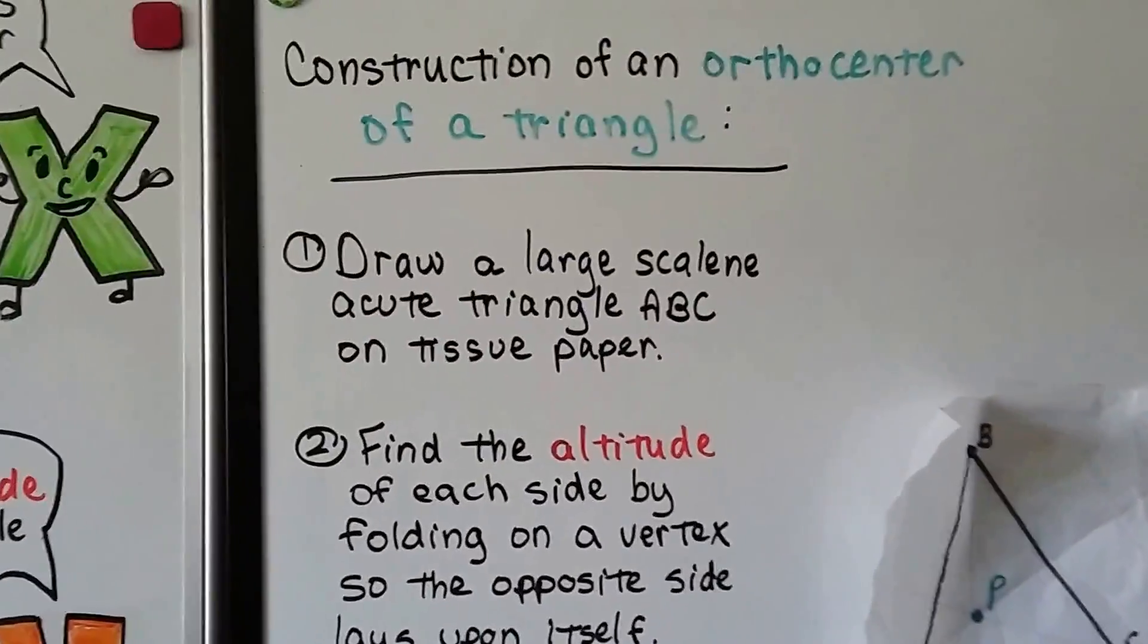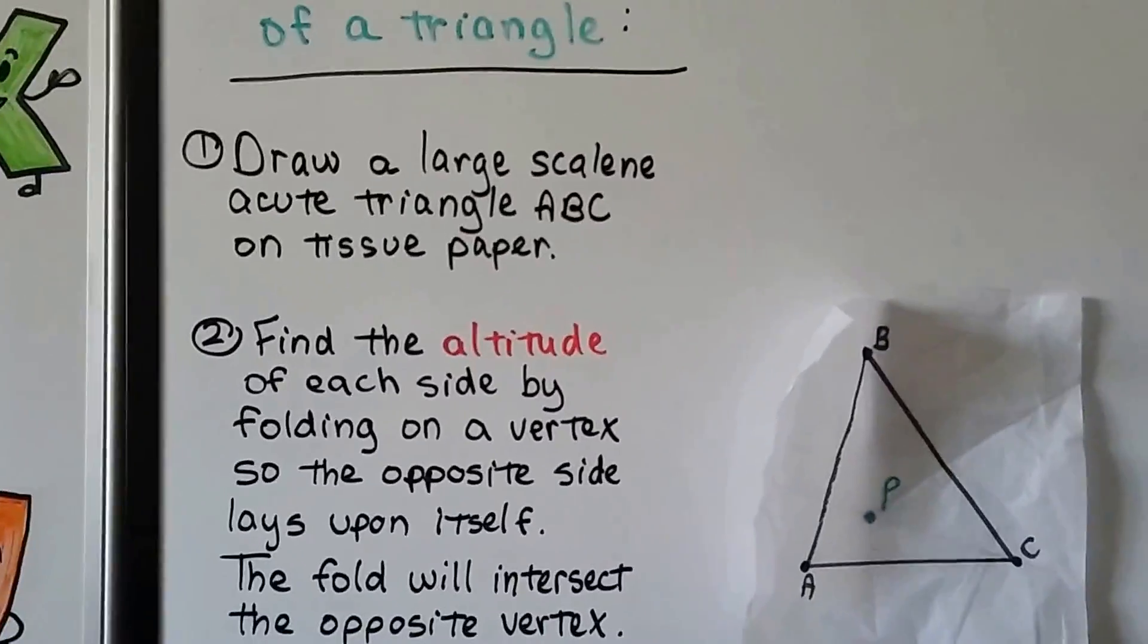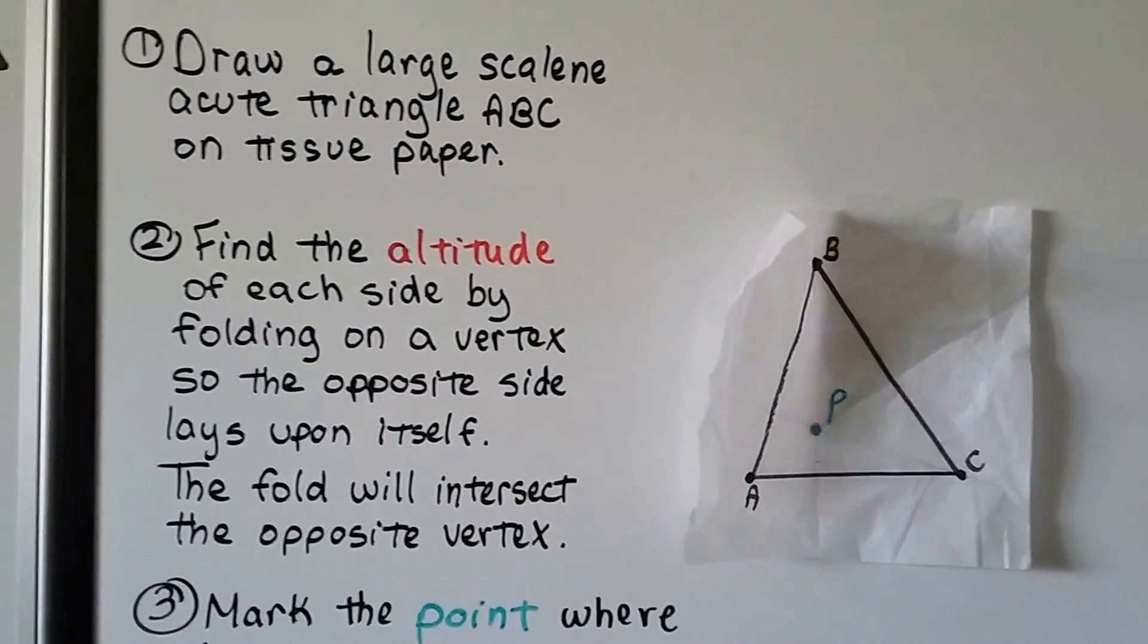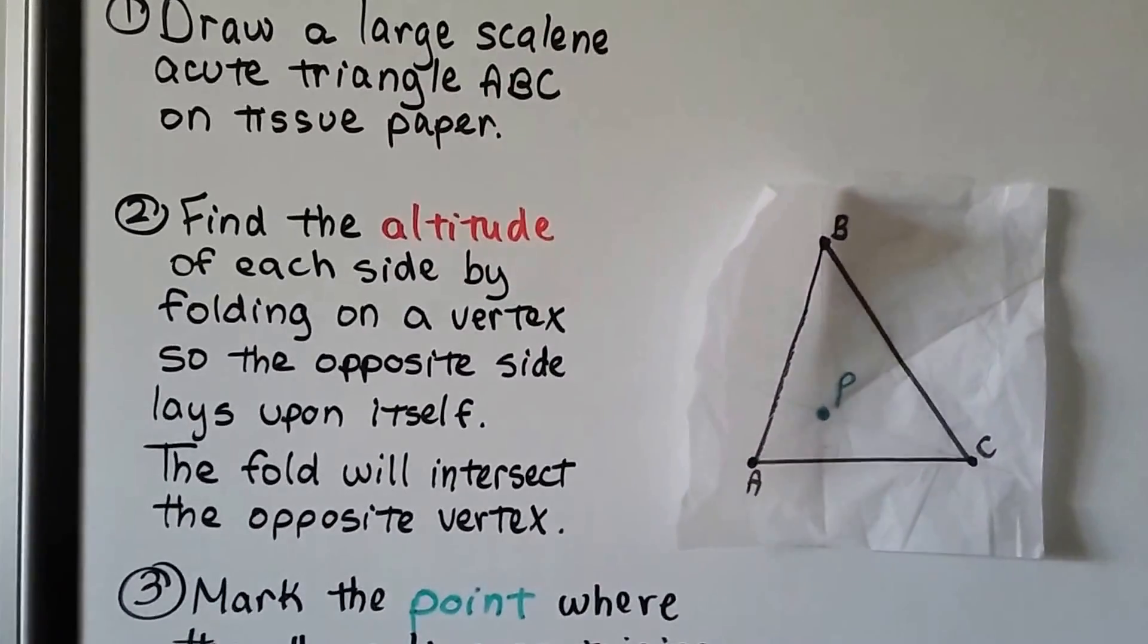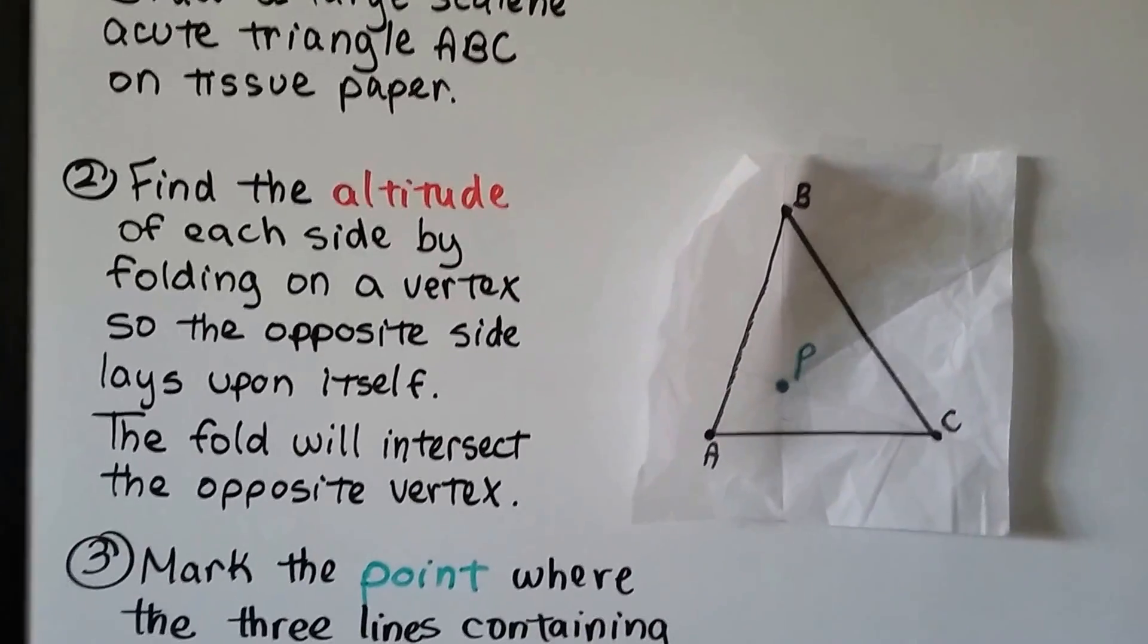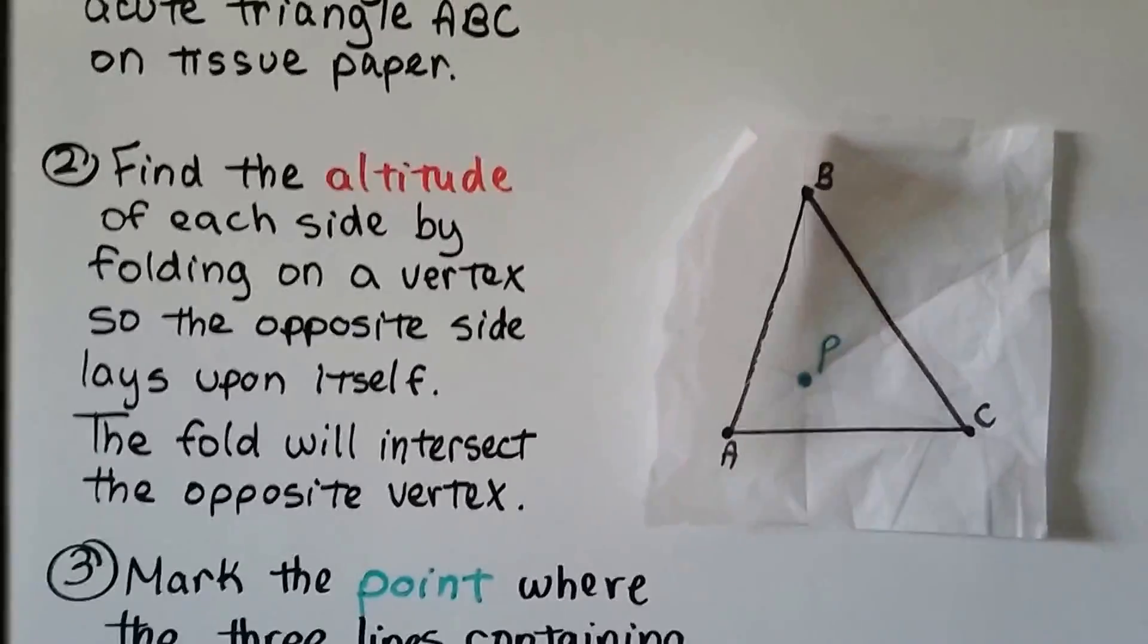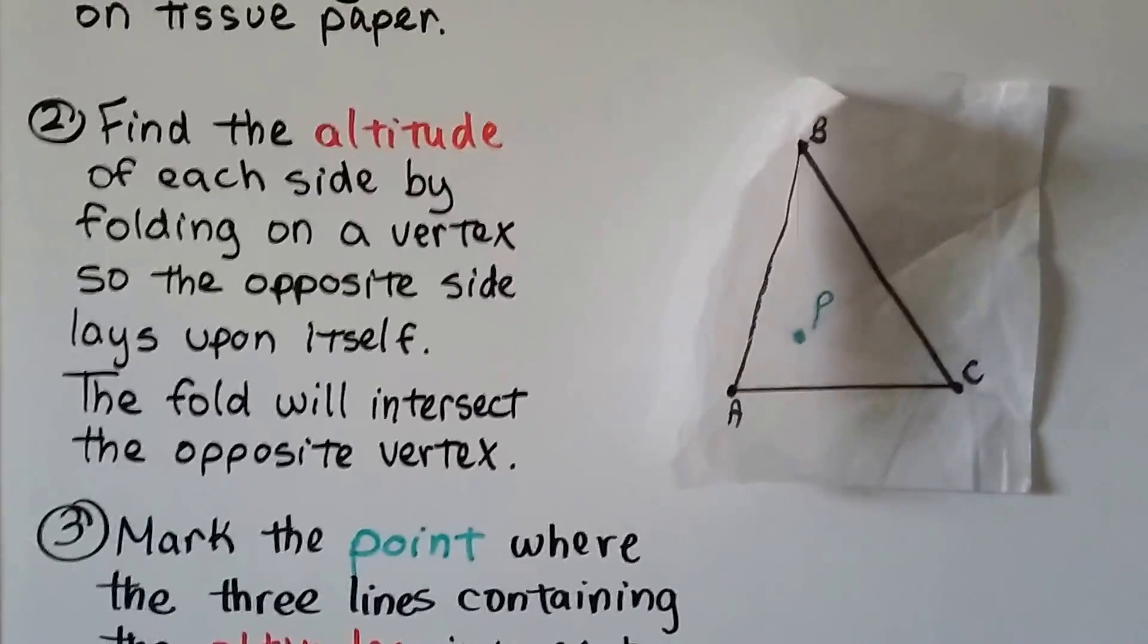So here's the construction of an orthocenter of a triangle using tissue paper. And the first thing we do is draw a large scalene acute triangle, ABC, on tissue paper. We find the altitude of each side by folding on a vertex. So the opposite side lays upon itself, and the fold will intersect the opposite vertex.